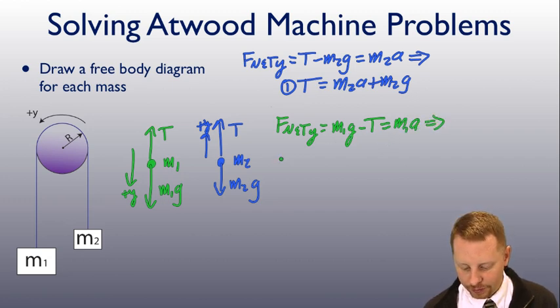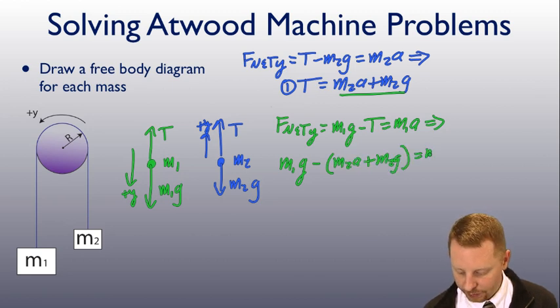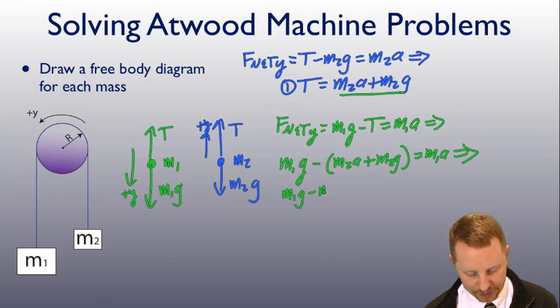Therefore, I can write that as M1G. My tension, I know, is M2A plus M2G. So, I can substitute in T with M2A plus M2G. So, that becomes minus M2A plus M2G equals M1A. Therefore, M1G minus M2G equals M1A plus M2A.